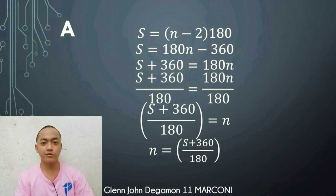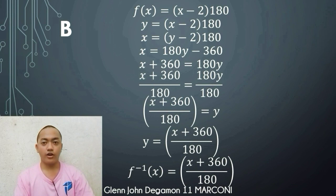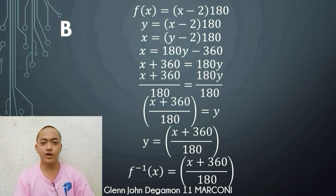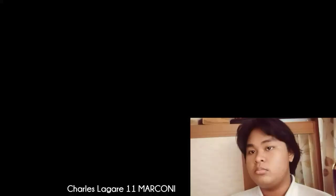For letter b, we find the inverse function. Starting with f of x equals (x minus 2) times 180, let f of x equal y: y equals (x minus 2) times 180. Swap the variables: x equals (y minus 2) times 180. Distribute 180: x equals 180y minus 360. Transpose: x plus 360 equals 180y. Divide both sides by 180: y equals x plus 360 over 180. Therefore, f inverse of x equals x plus 360 all over 180, which is our inverse function.